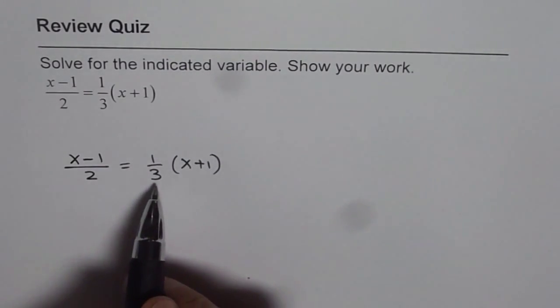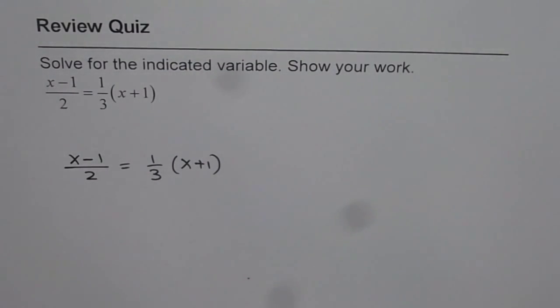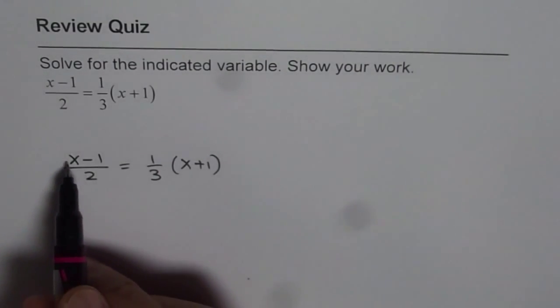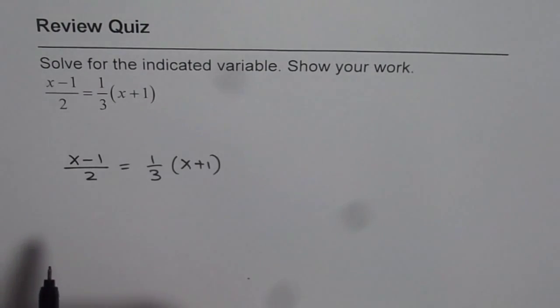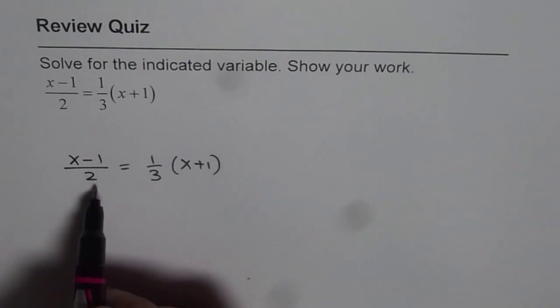Now the lowest common denominator can be 6. To get 6 we need to multiply this expression by 3 and that expression by 2. So the other way of doing it is kind of cross multiply.